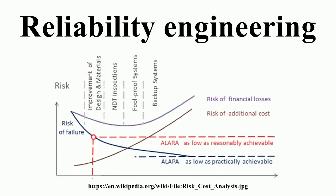ISO 9000 added reliability measures as part of the design and development portion of certification. The expansion of the World Wide Web created new challenges of security and trust. The older problem of too little reliability information had now been replaced by too much information of questionable value. Consumer reliability problems could now be discussed online in real time. New technologies such as micro-electromechanical systems, handheld GPS, and handheld devices that combined cell phones and computers all represented challenges to maintain reliability. Product development time continued to shorten, and reliability tools and tasks had to be more closely tied to the development process itself. In many ways, reliability became part of everyday life and consumer expectations.